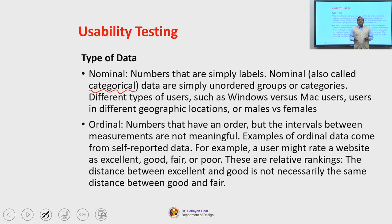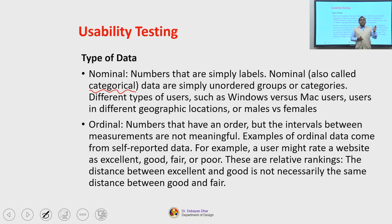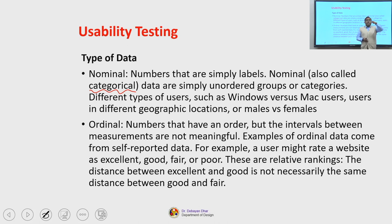Ordinal data are numbers that have an order — for example, roll numbers — but the intervals between the measurements are not meaningful. We cannot ascertain that the same interval exists between all values. Examples of ordinal data come from self-reported data: a user might rate a website as excellent, good, fair, or poor. The distance between excellent and good is not necessarily the same as between good and fair. Though ordinal data can be ranked, the intervals are not consistent, and unlike nominal data, nominal data cannot be ranked at all — you cannot rank between males and females.